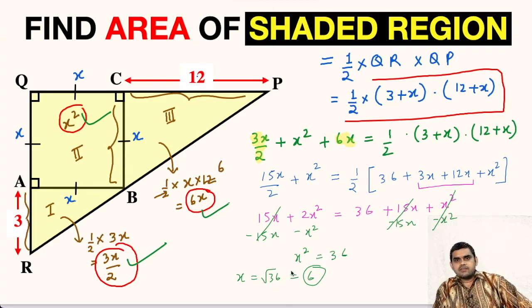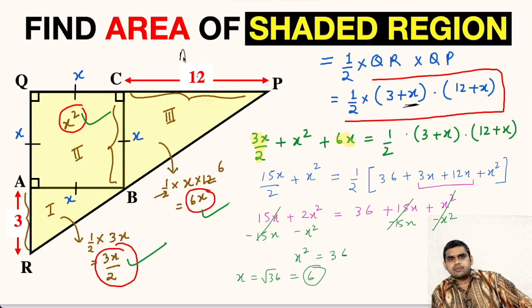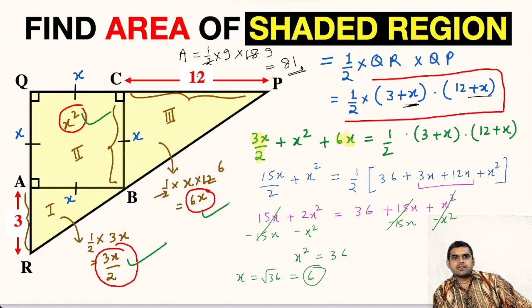After getting the value of X, we can substitute it here. The area of the shaded region will be equal to half times 3 plus X, that means 3 plus 6 equals 9, multiplied with 12 plus X, that means 12 plus 6 is 18. So 9 times 9 is 81. The area of this shaded region will be 81 square units.